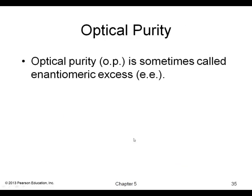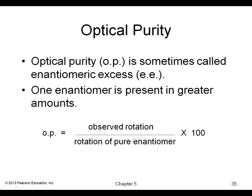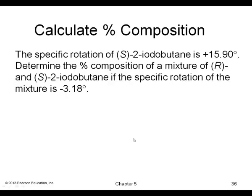Optical purity, sometimes called enantiomeric excess, refers to situations where one enantiomer is present in greater amounts than the other.